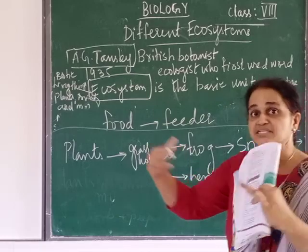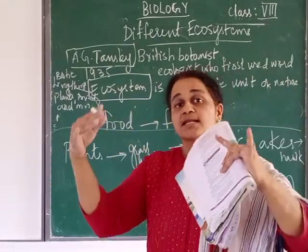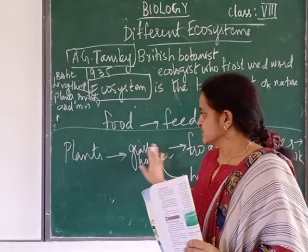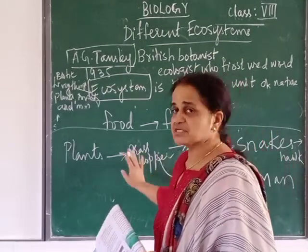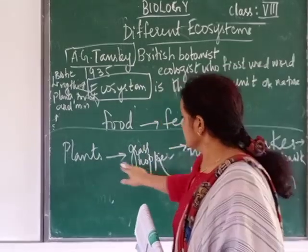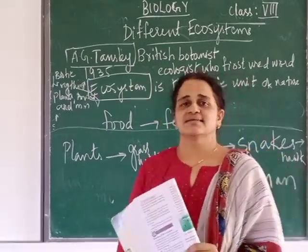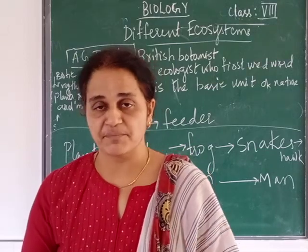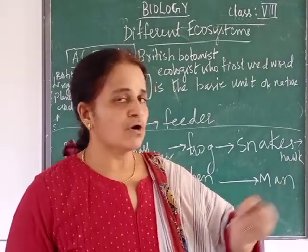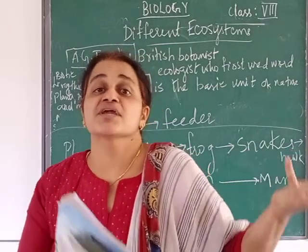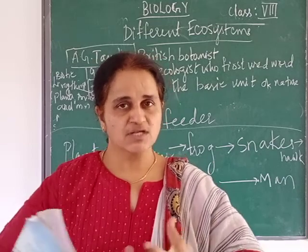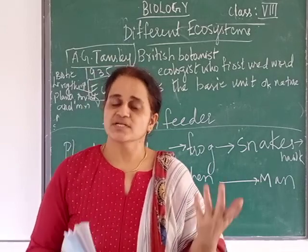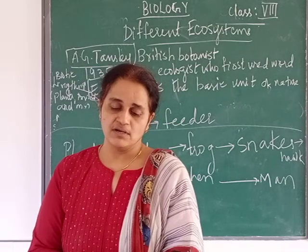This food chain can be further linked — for example, the grasshopper can also be eaten by a hen, the hen eaten by man, and the snake eaten by a large bird like a hawk or eagle, or a mongoose. When food chains are interlinked with one another, they become a food web. This shows interdependence — feeding relationships between plants and animals. Organisms also compete for space, reproduction, and shelter, like when you sow a hundred seeds but only fifty germinate due to competition for space and nutrients.